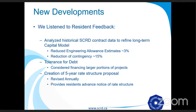There are some new developments. As we looked to revise our capital funding model, we listened to resident feedback. We heard we were too conservative, and so we looked at historical SCRD contract data to help us refine our long-term model. We reduced our engineering allowances by 3% and reduced the contingency we thought was necessary by 15%. We also heard there was a higher tolerance for debt, so where possible we considered financing larger portions of projects. We also heard that the uncertainty about future financial rates was causing some anxiety, and so we're looking to propose a five-year rate structure which will allow residents to be aware of their rates for a five-year period. This would be revised annually, ideally.